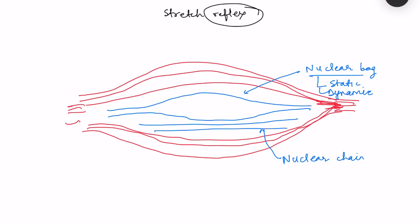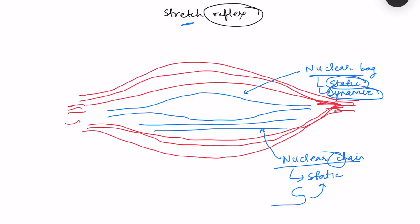The static receptor is important for detecting a static stimulus and the dynamic receptor is important for detecting a dynamic stimulus — and stretch is the stimulus. Nuclear chain fibers detect only static stimulus. A memory trick: nuclear chain has a 'C' which you make into 'S' for static; nuclear bag — 'B' becomes 'D' — so nuclear bag detects both static and dynamic.